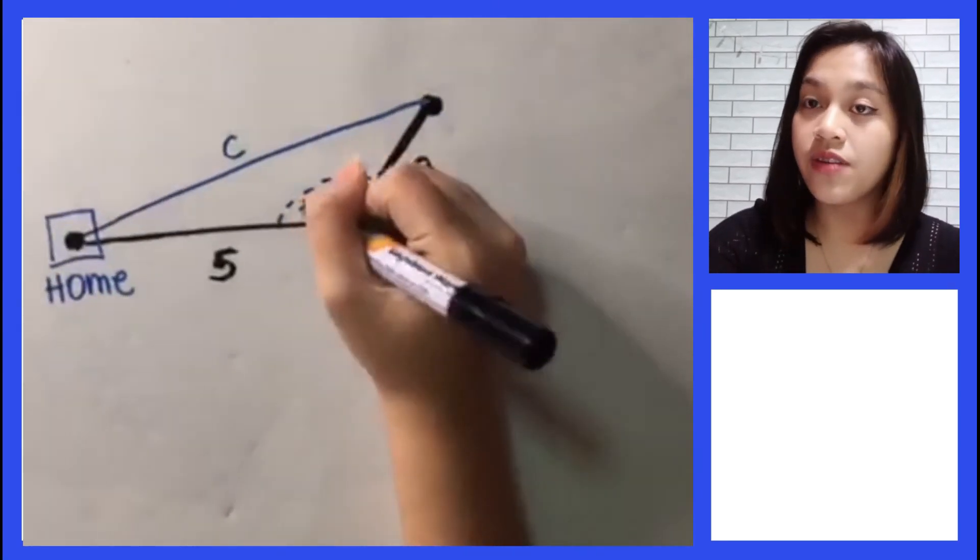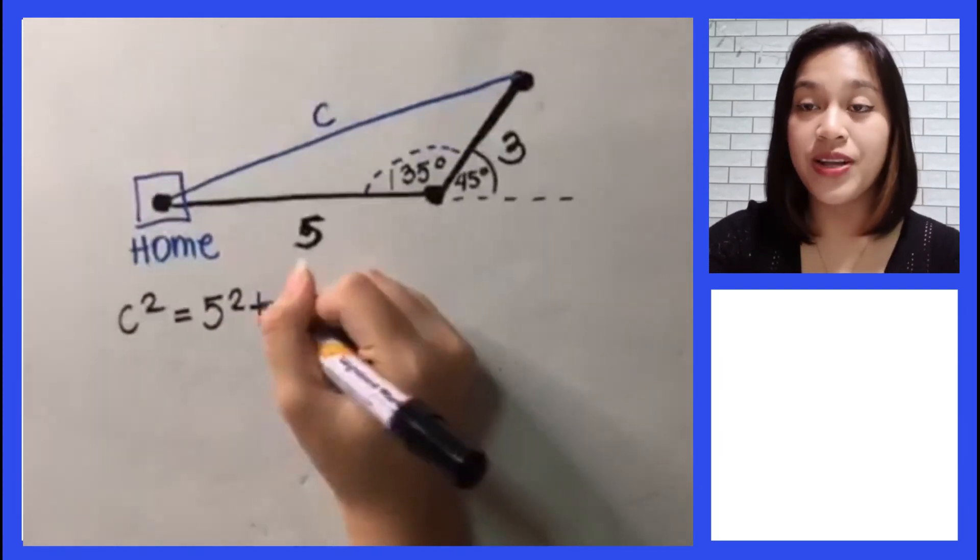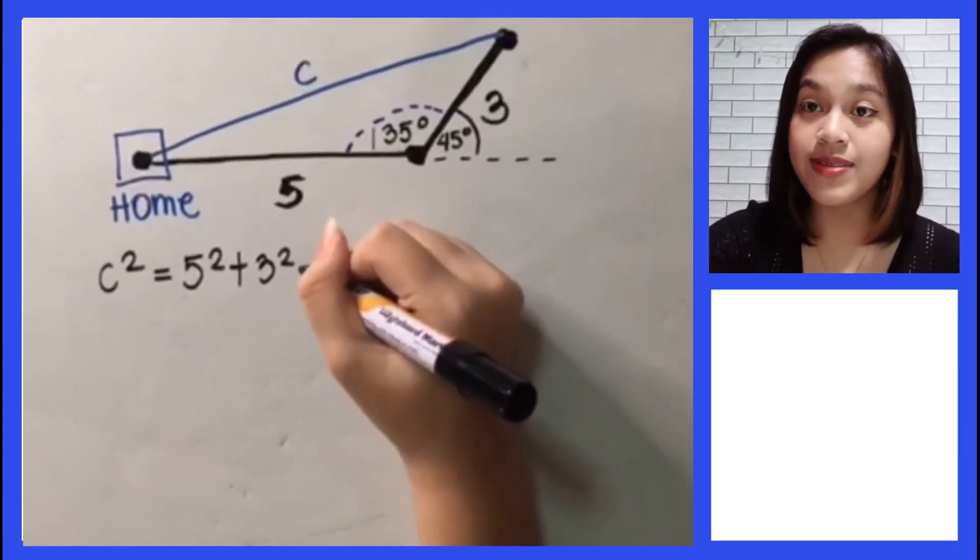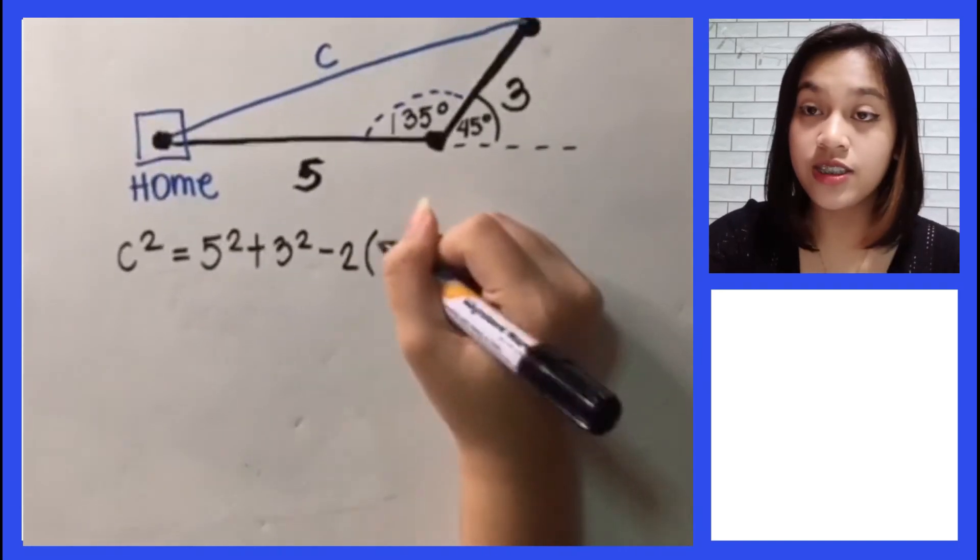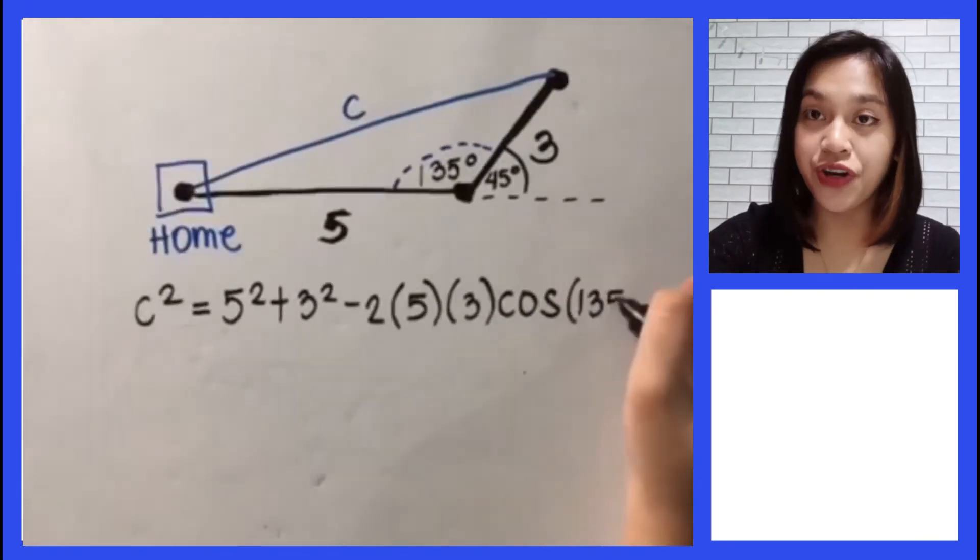Now we must set up the problem. It says c squared equals 5 squared plus 3 squared, then subtract 2 times the sides, which is 5 and 3. Then take the cosine of the angle you are trying to find. It says cosine times 135 degrees.